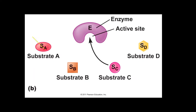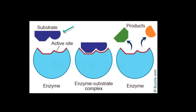Third, enzymes are very specific — they catalyze only one chemical reaction. The substrate is the molecule the enzyme acts on. They bind together to form an enzyme-substrate complex. The product is what's produced by the chemical reaction.